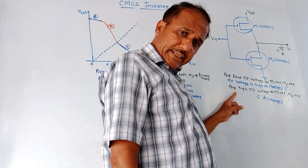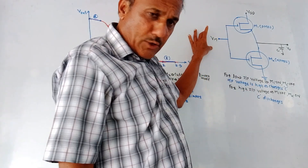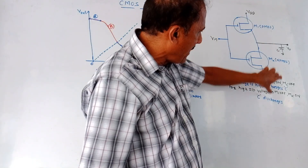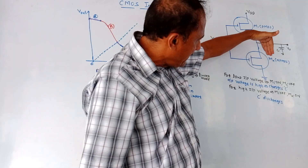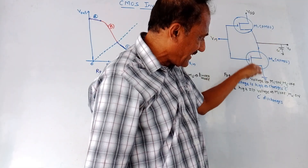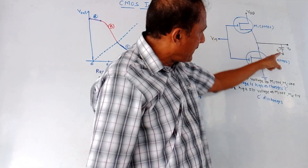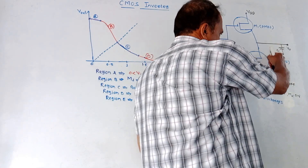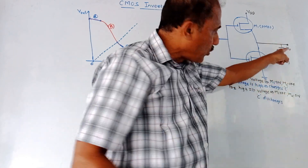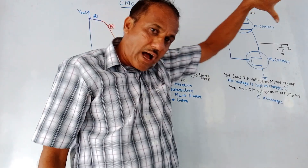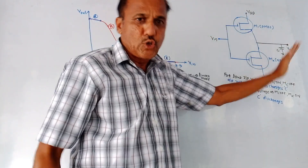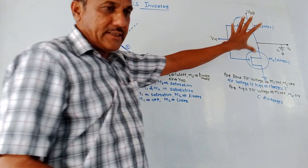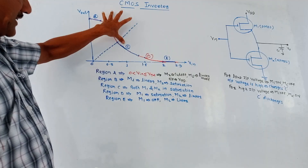On the contrary, for high input voltage, the reverse thing will happen: M1 is off and M2 is on. Look at the diagram — M2, that is the N MOSFET, is connected to the ground. So whenever M2 is on, the capacitor will get a path to discharge, and discharging of the capacitor will be through M2. So output will become zero. Whenever you apply high input, output becomes zero — again, this is the inverter action.